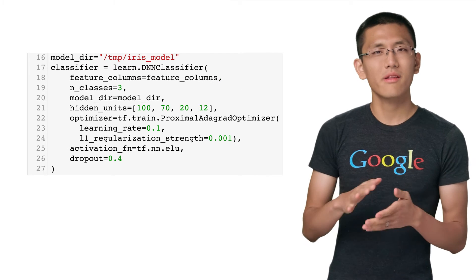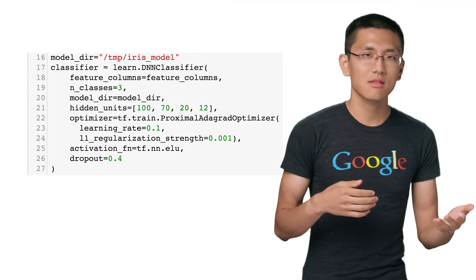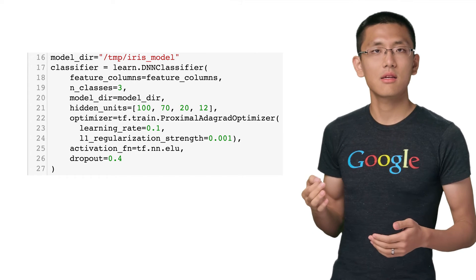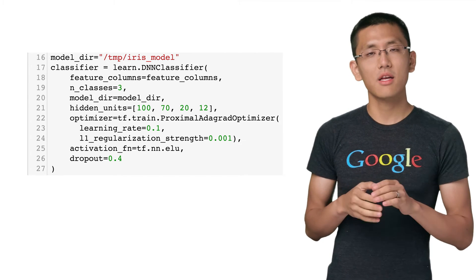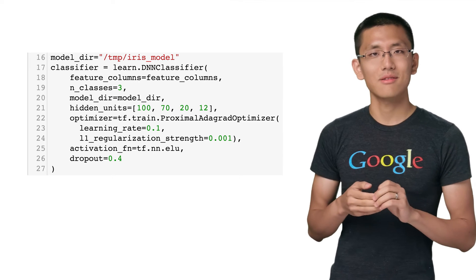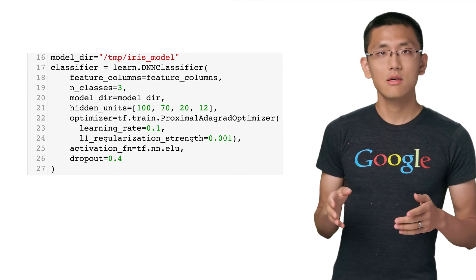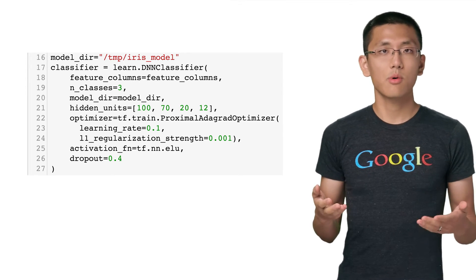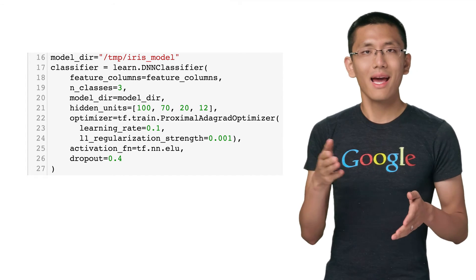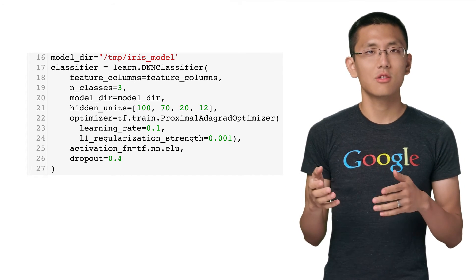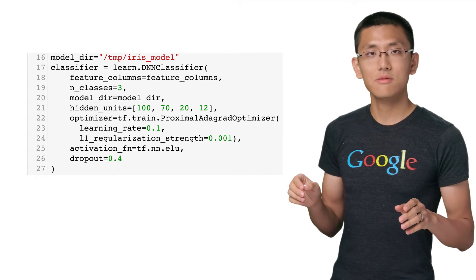Of course, with any pre-constructed system, when you gain in convenience, you often lose in customizability. DNN classifier tries to get around this by including a number of additional parameters that you can optionally use. When left out, some reasonable defaults are utilized. For example, the optimizer, the activation function, and dropout ratios are all available to customize, along with many others.